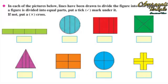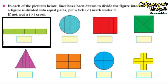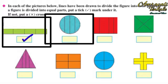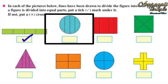In each of the pictures below, lines have been drawn to divide the figure into four parts. If a figure is divided into equal parts, put a tick mark under it; if not, put a cross. See the first figure — this figure is divided into equal parts, so we will put a tick. In the next figure, this is not divided into equal parts, so we will put a cross.